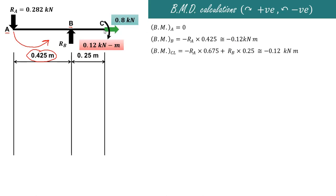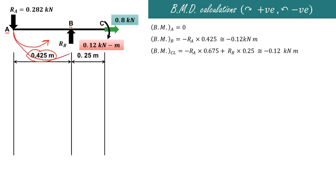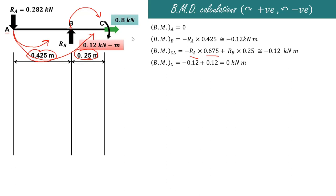Just to the left of C, considering all forces on the left-hand side: RA produces an anticlockwise moment over a distance of 0.675 m (negative), and RB produces a clockwise moment over a distance of 0.25 m (positive). These nearly cancel, giving minus 0.12 kN·m just left of C. Exactly at point C, we add the clockwise end moment of plus 0.12, so minus 0.12 plus 0.12 equals zero.